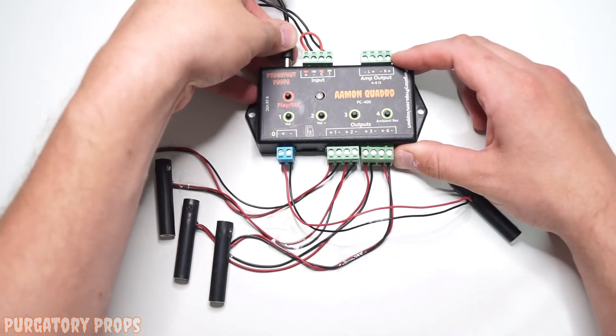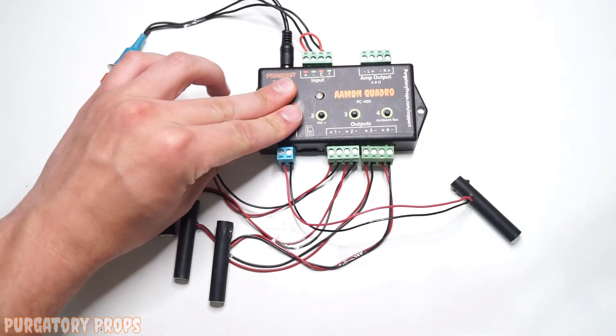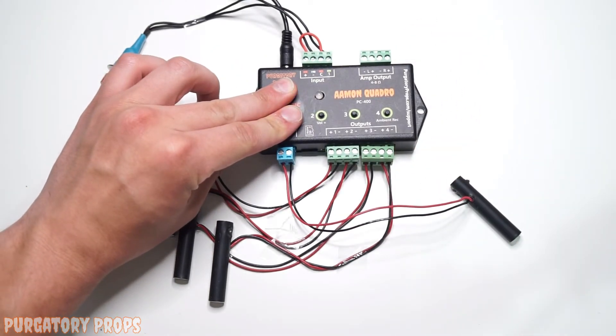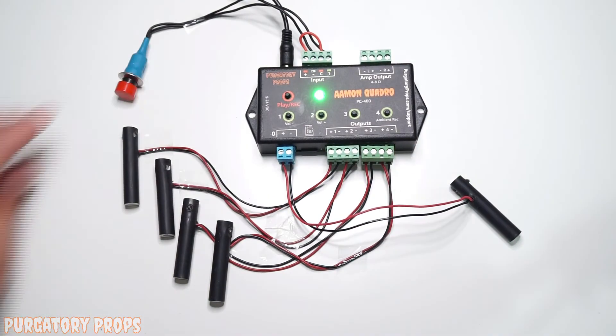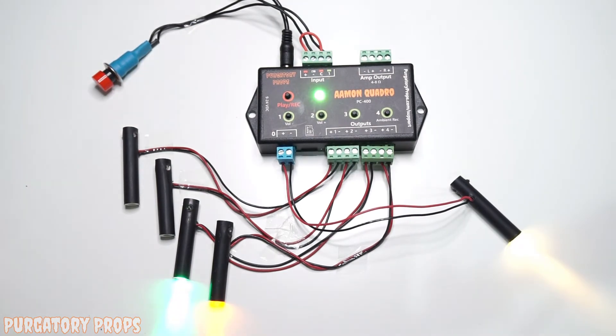To put it back into that default mode, just hold play record and button 1. And then we're back in that default mode.